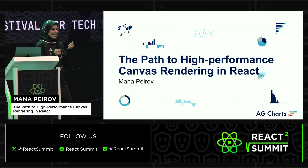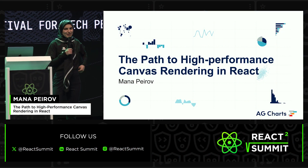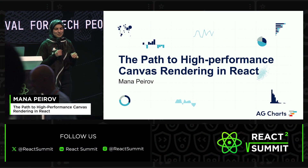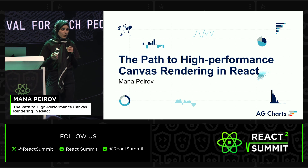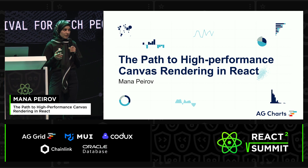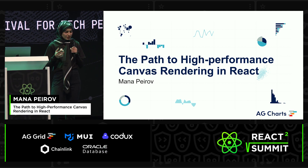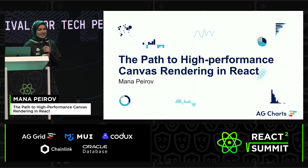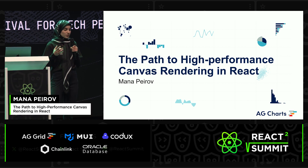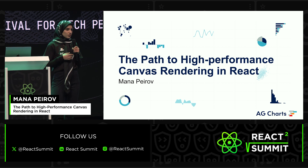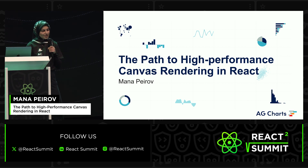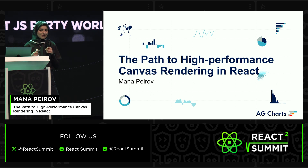Hello, everyone. My name is Mana, and I work at AG Grid, but I don't work on the grid. I work on the charting team where I build the AG Charts charting library. I was curious to know whether some of the performance optimization strategies that we use in AG Charts also apply when you're using Canvas directly in React.